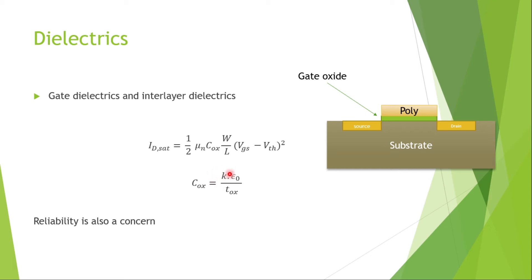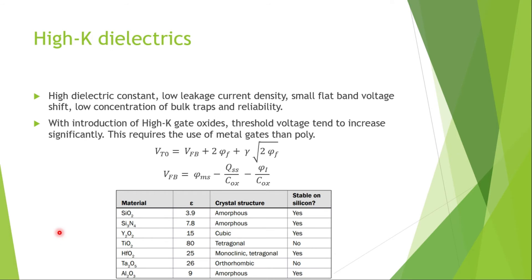So if the dielectric constant for silicon is 3.9, and if we go to higher dielectric constants, what we can do is increase the capacitance, which will in turn increase the drive strength of the current, which will increase the speed of the device and also solve the problem of reliability.